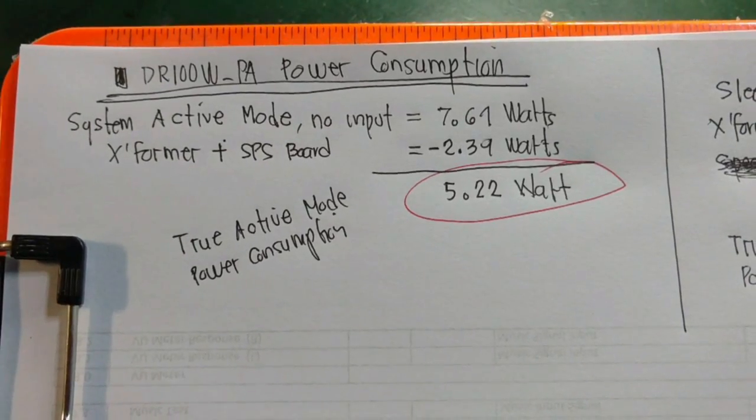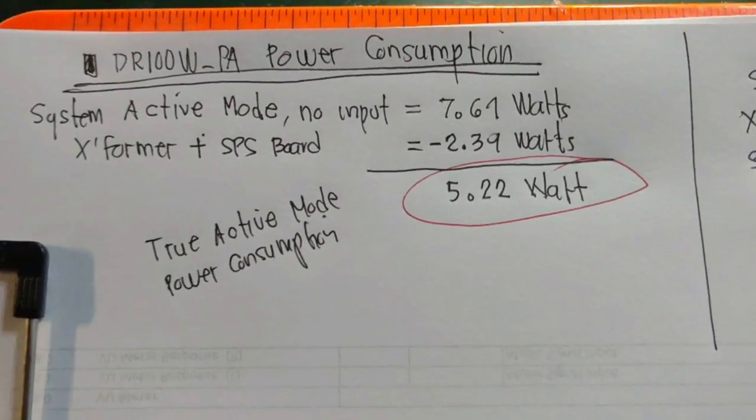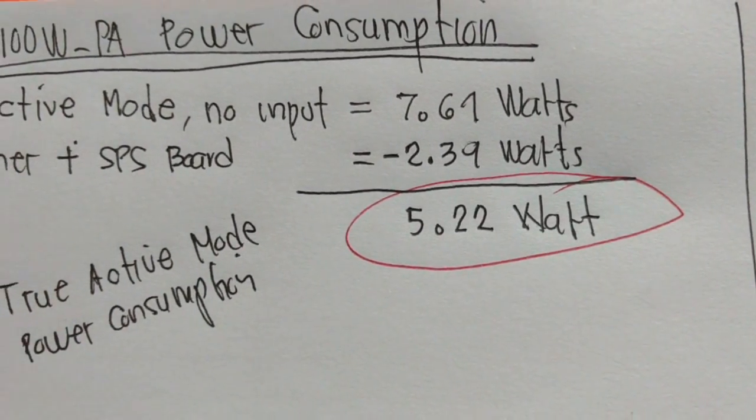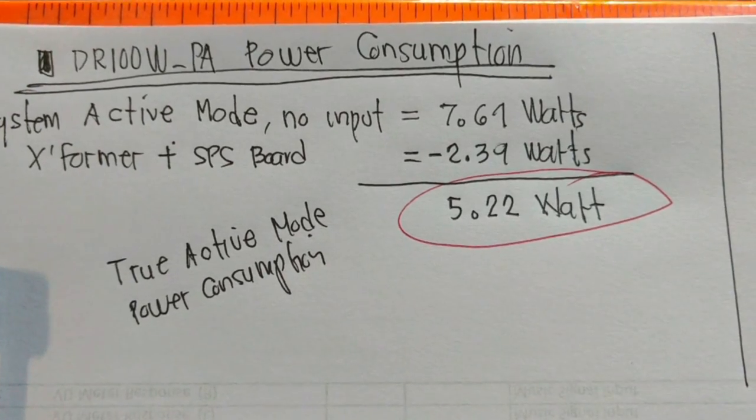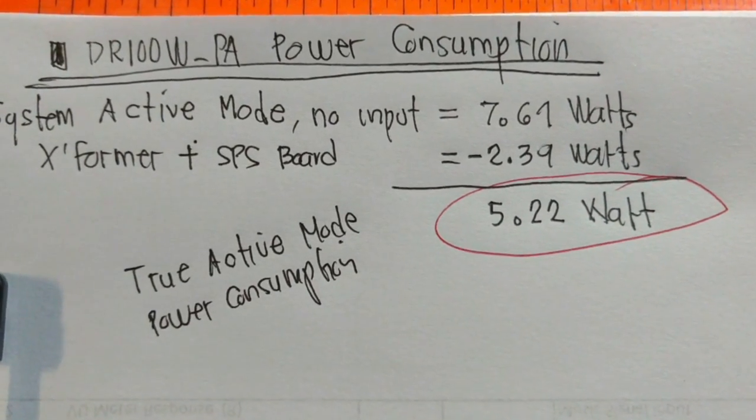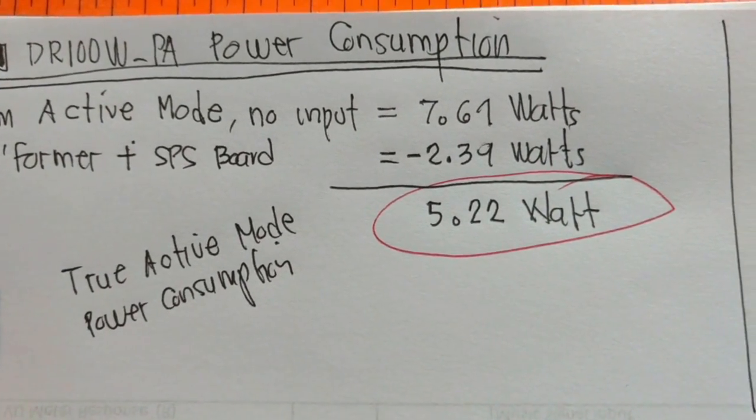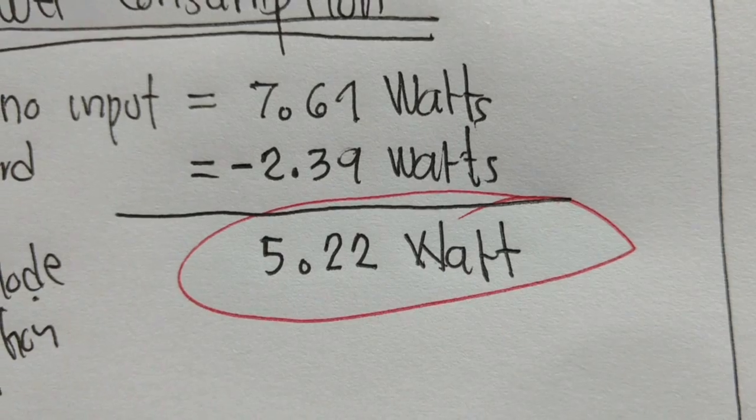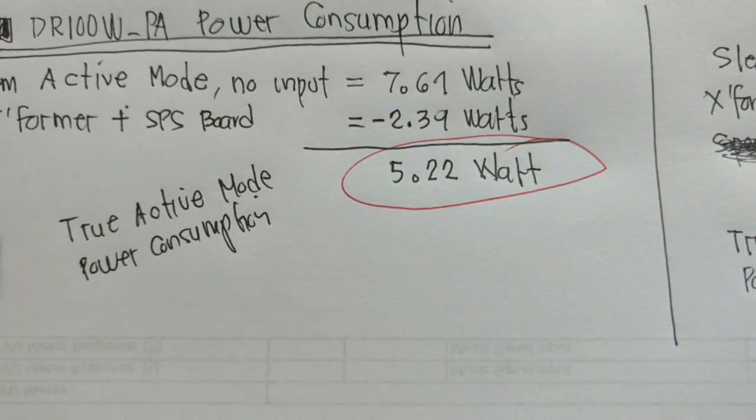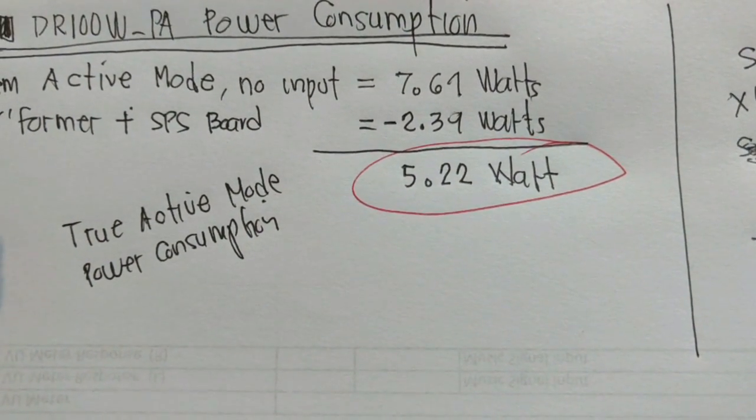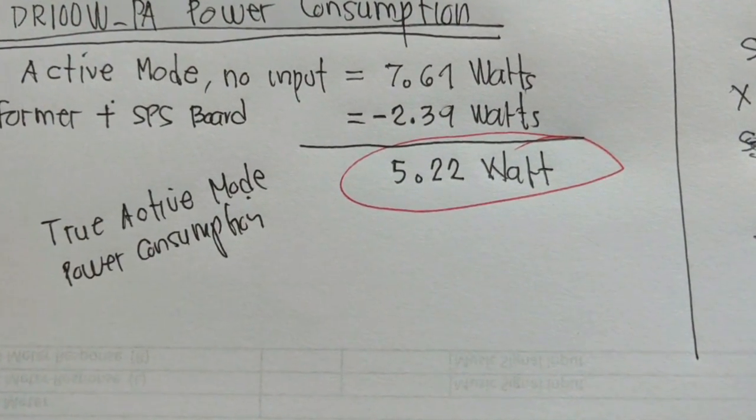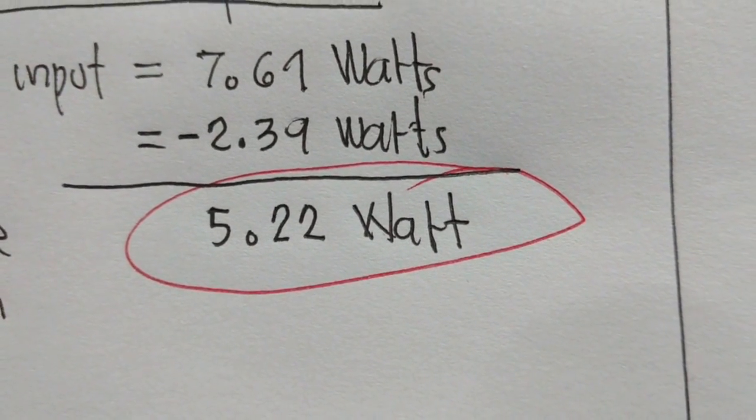The system active mode with no input signal is 7.61 Watts. I need to subtract the transformer and SPS board power consumption which is 2.39 Watts. And the effective active mode with no input signal consumed by the board is 5.22 Watts.